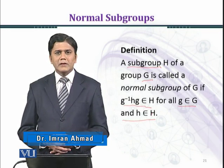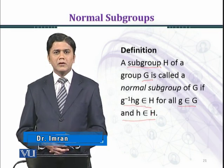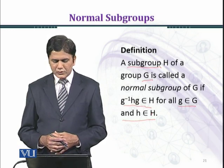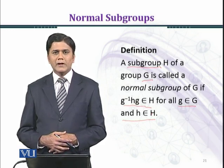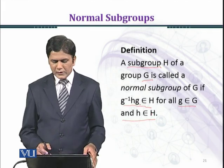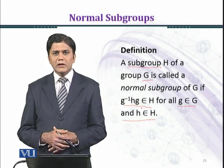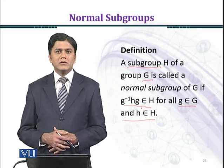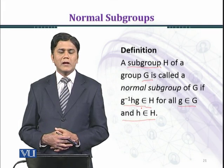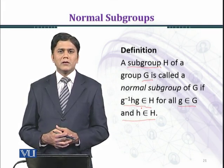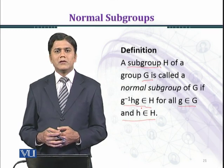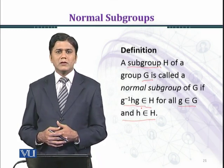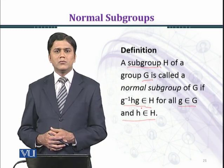Here you can see the condition given to normal subgroups: g⁻¹Hg belongs to H. If you multiply g on both sides, we get HG belongs to GH. GH is the left coset and HG is the right coset. So this condition is equivalent to the left coset being equal to the right coset.